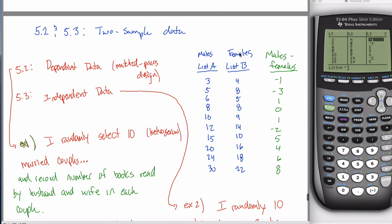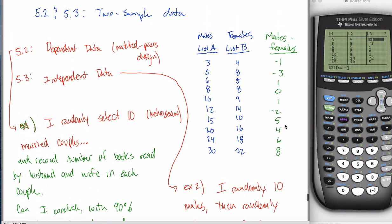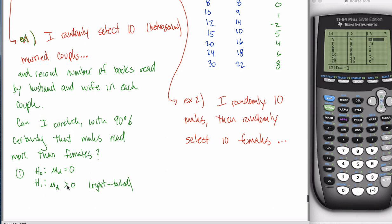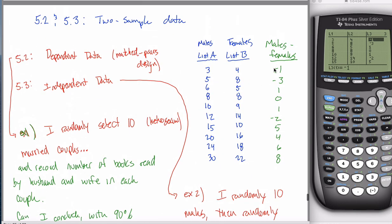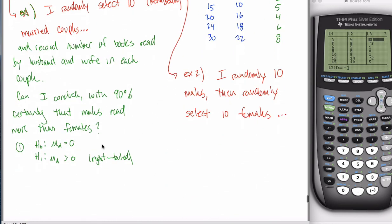If you did the subtraction in the wrong order — females minus males — then a claim of 'males read more than females' would become a left-tailed claim needing a less than sign. If you do the subtraction in a counterintuitive way, it messes up your alternative hypothesis. Don't worry too much about it — I'll try to ask it in the easiest way possible, and I'll show you a check at the end. If it's a does-not-equal test, the order doesn't matter. But for a one-tailed test, there's a check I'll show you.